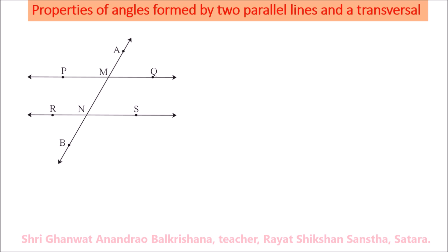In this diagram, line PQ is parallel to line RS, and line AB is a transversal of these two parallel lines. Line AB intersects the two lines at two distinct points M and N, so a total of eight angles are formed.